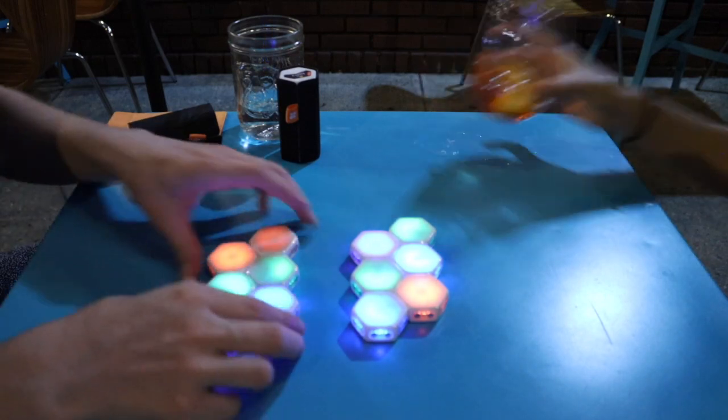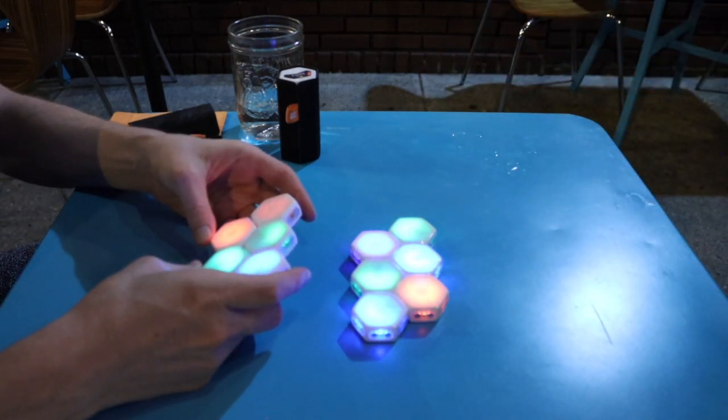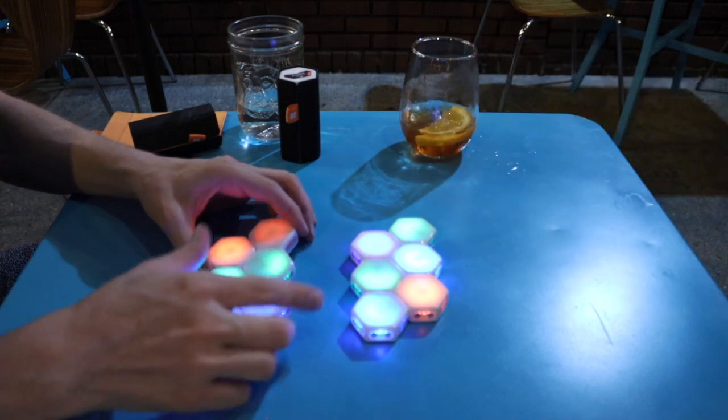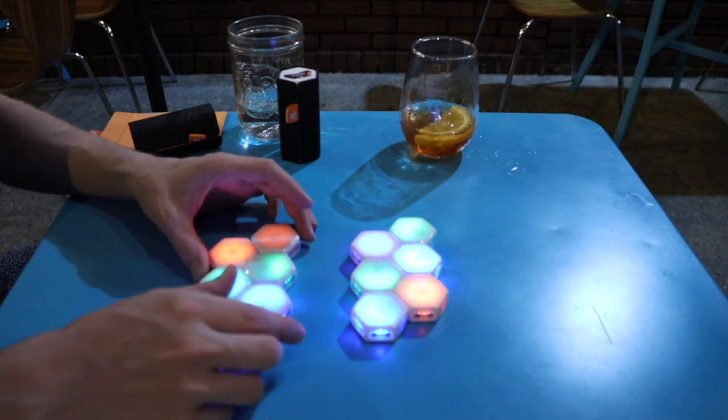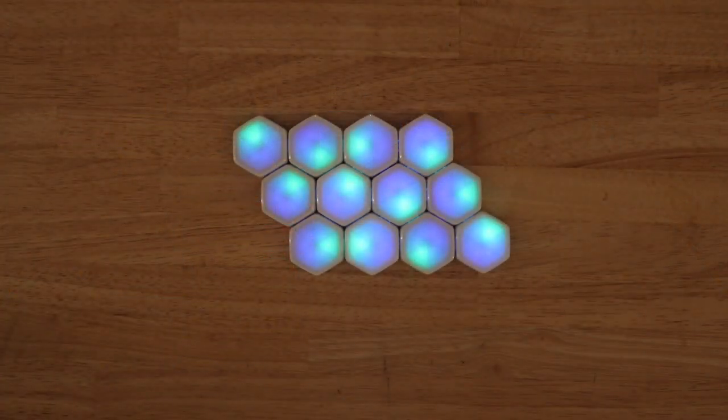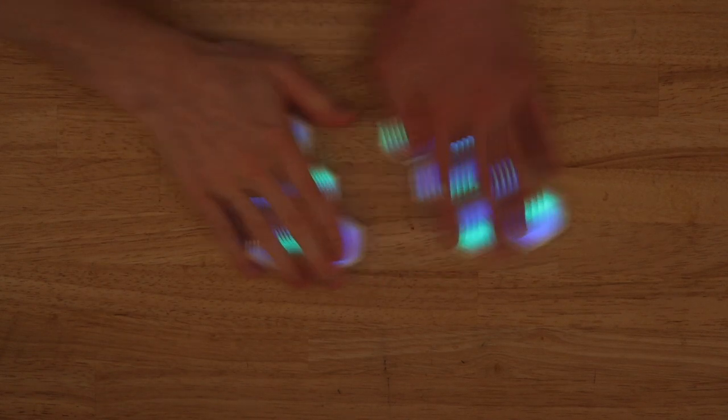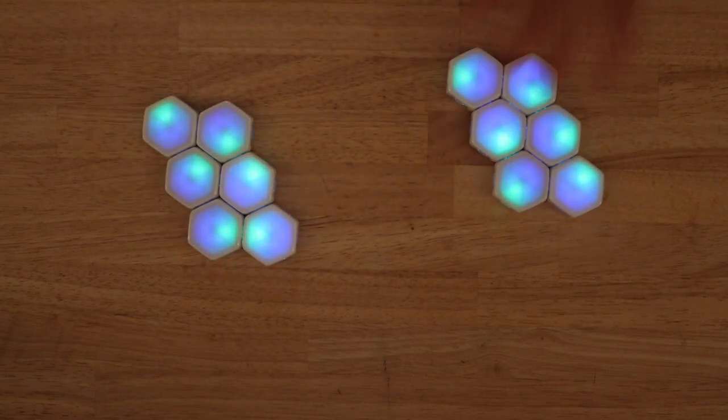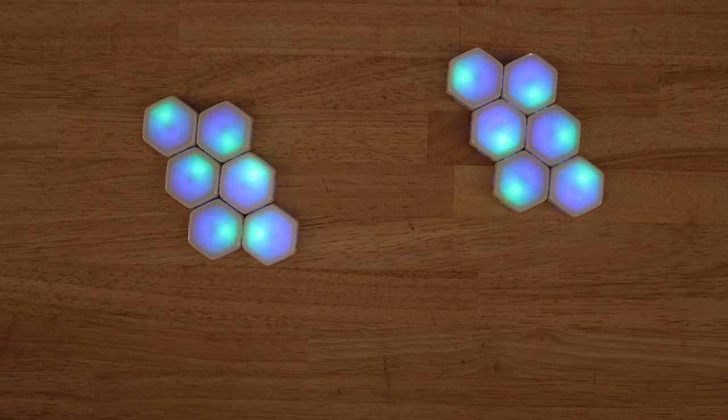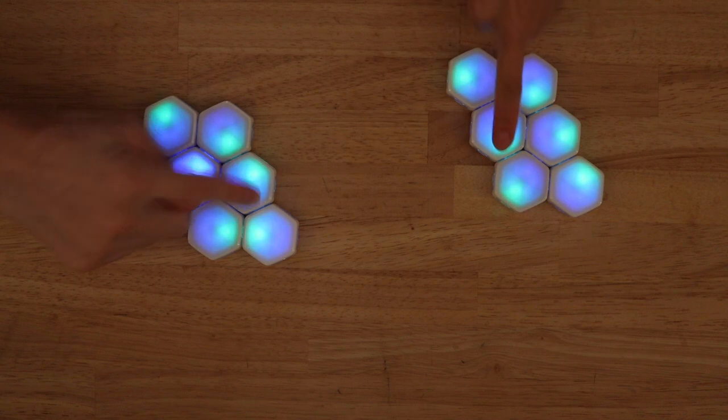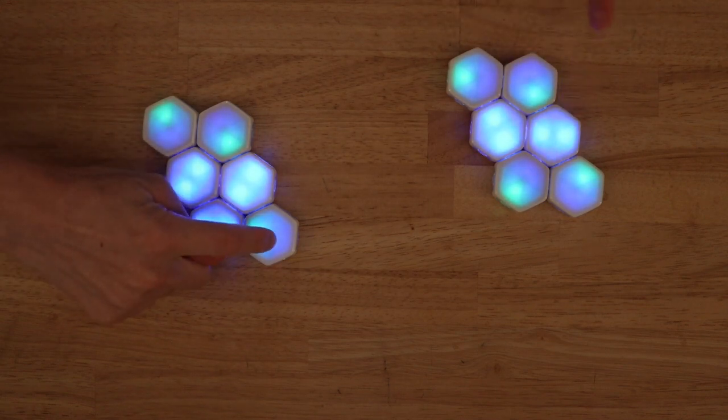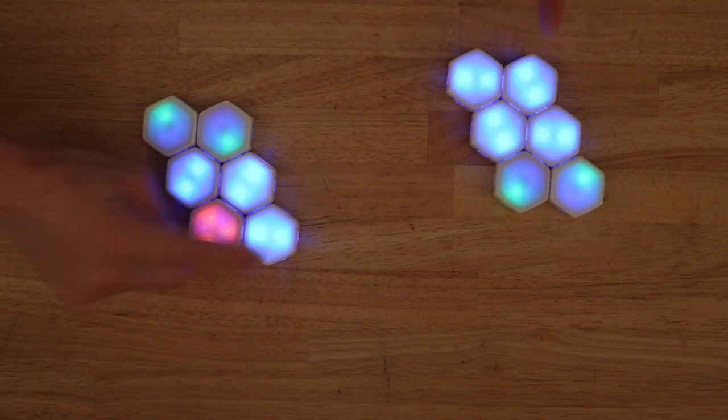Battle Balloons is a game for two or more players and can be played with six or more blinks. To get started, all players need to set up their fleet of balloons. Divide the balloon blinks evenly among the players. Each player clusters their balloons together and assigns each balloon a color. Single click a balloon to cycle between red, blue, and green.